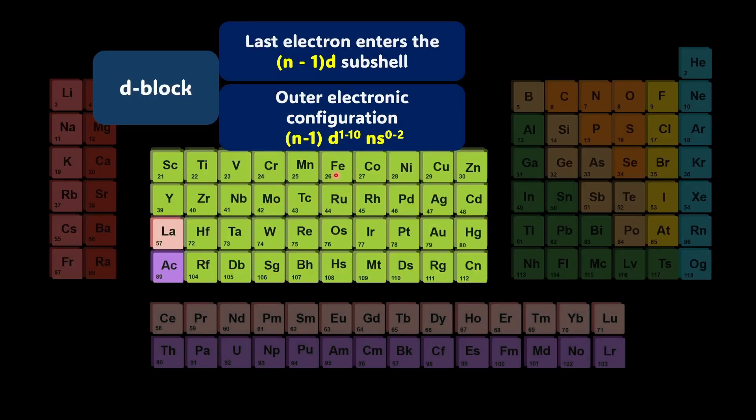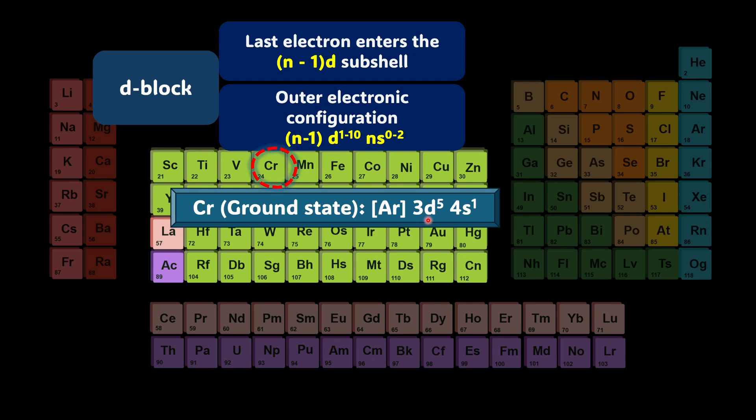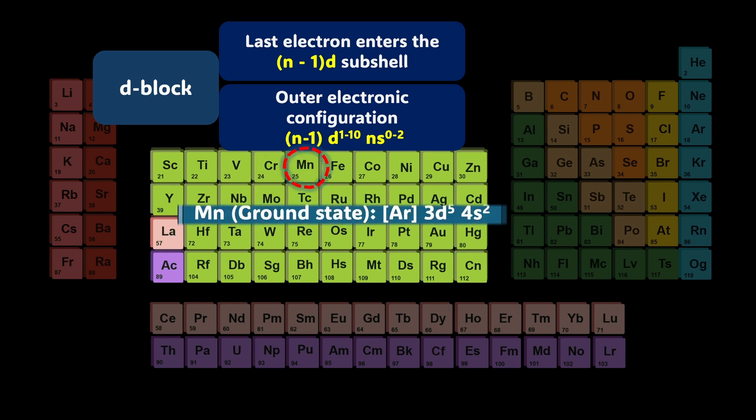Now comes D block. In D block the last electron enters (n-1) D subshell and electronic configuration can be written like (n-1)d¹⁻¹⁰ ns⁰⁻². For example chromium is 3d5 4s1 and manganese is 3d5 4s2. You remember the electronic configuration of these two elements?